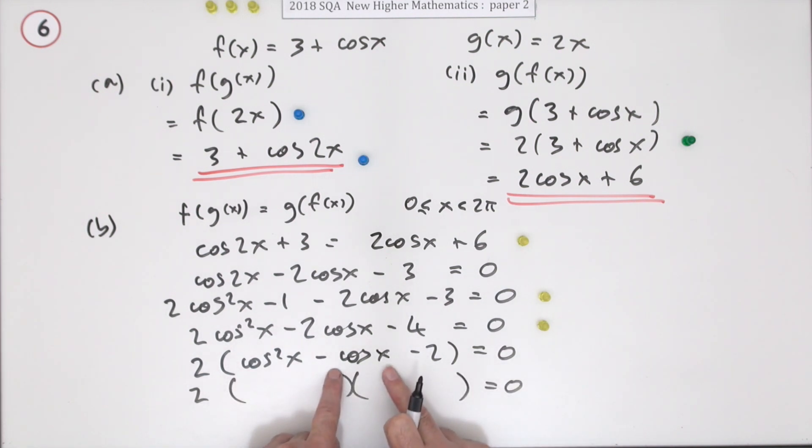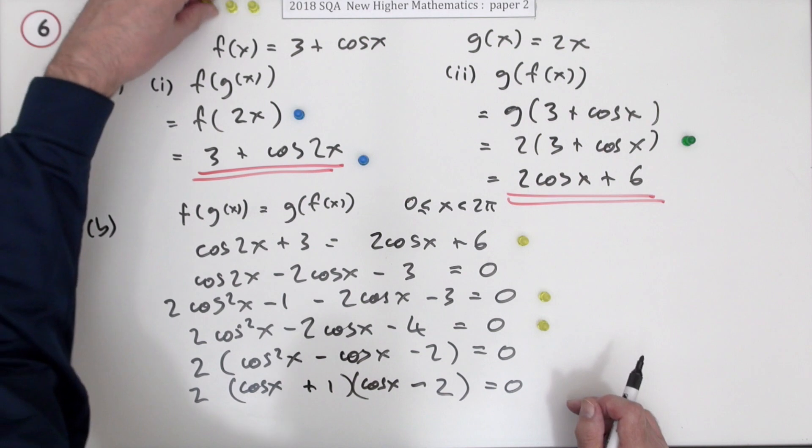Remember this is a quadratic in cos x, not x. So to make cos squared, it must be cos x times cos x. To make 2, it can only be 1 and 2. If the middle term is negative, it means this outer one is negative so this one is positive. That's worth a mark.